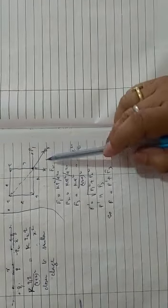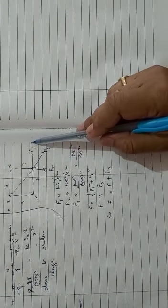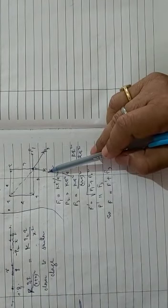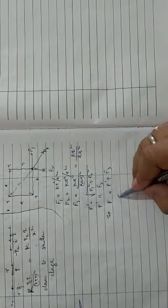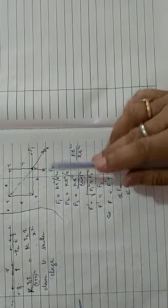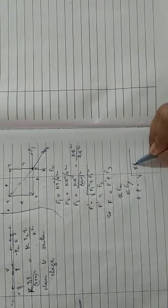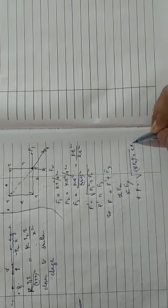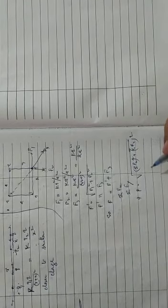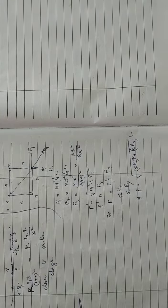Remember, this method of adding F dash and F3 works because F1 and F2 are equal. If F1 and F2 are not equal, apply resolution: resolve the diagonal force F3 into components F3·cos θ and F3·sin θ, then add all X components and all Y components separately. The resultant is the square root of (ΣFx)² plus (ΣFy)², and the direction is θ equal to tan inverse of ΣFy by ΣFx.